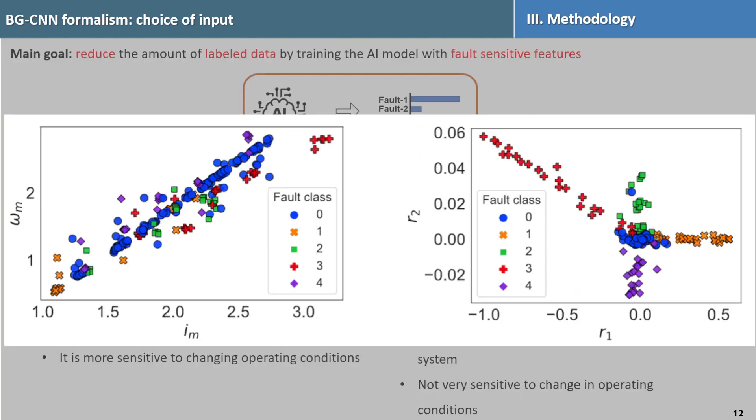Here is an example from simulation data to show the difference between the two. In the left hand side is the sensor space and in the right hand side is the residual space which shows the distribution of various fault data. It is clear that in the residual space, the faults can be easily isolated compared to the sensor space.